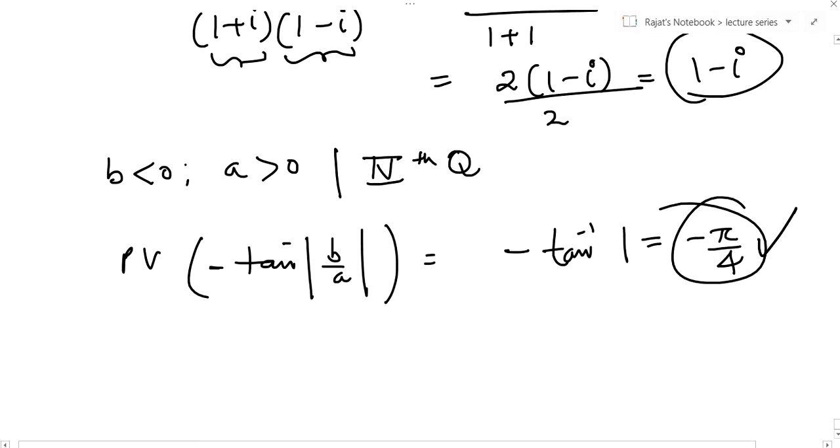So this is minus π by 4. The principal value is minus π by 4. These are some of the basic ideas of argument, and in the next video lecture we will cover some new topic.